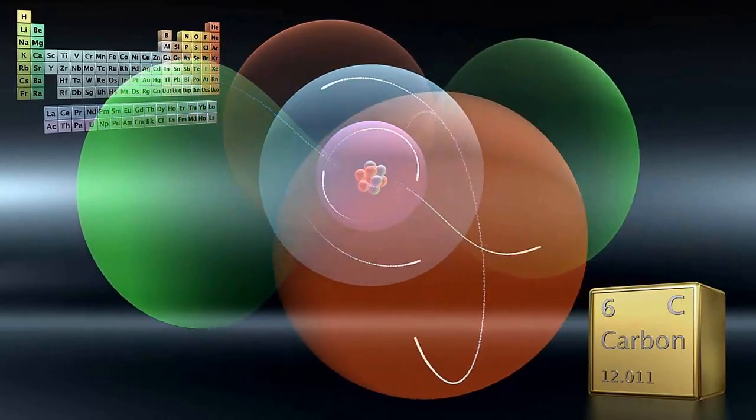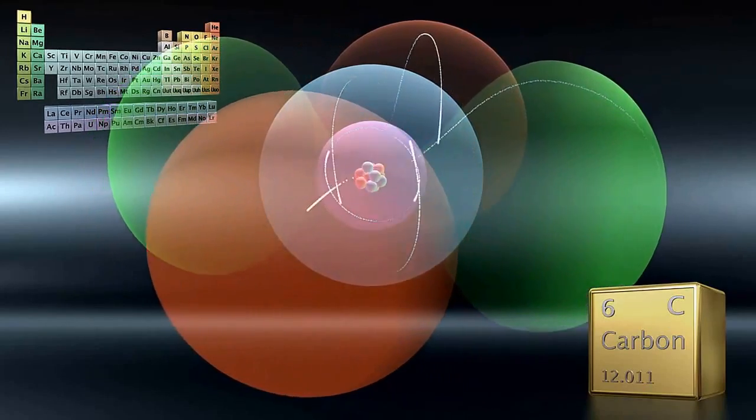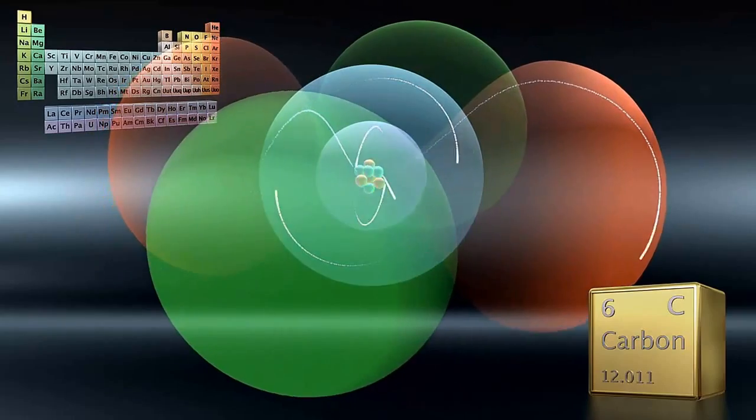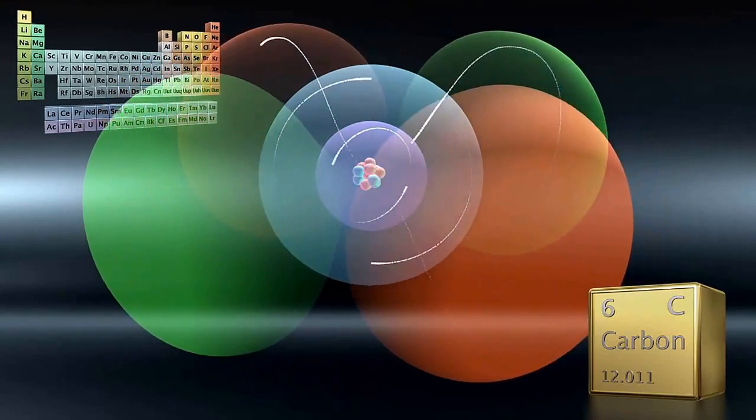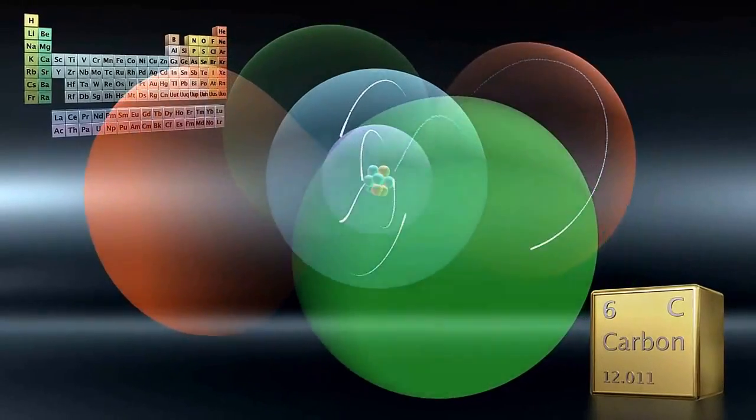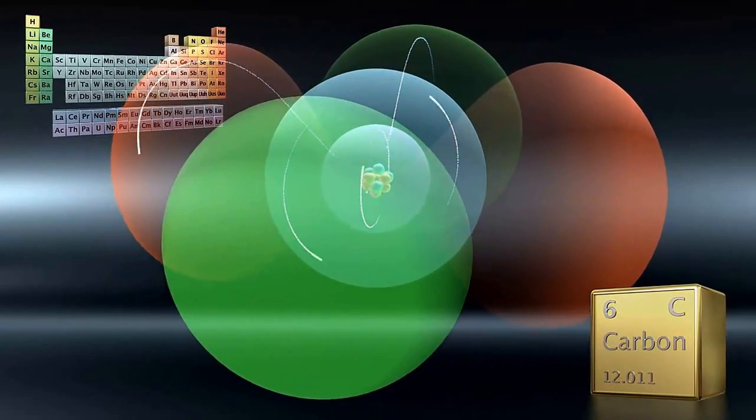This video showed you the nuts and bolts of how covalent bonds are made, and how many each kind of atom can make. The next video shows you how you can use these simple rules to build long and complex molecules, like polymers and proteins.